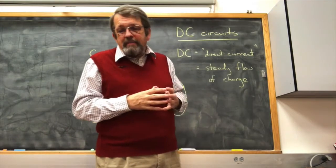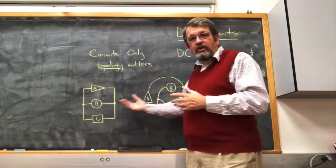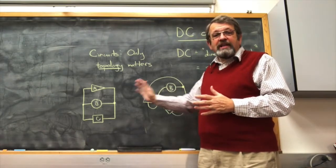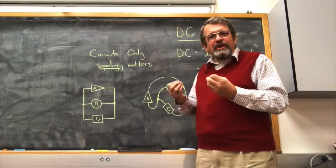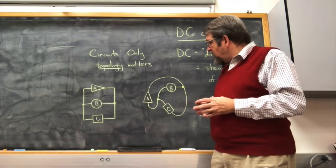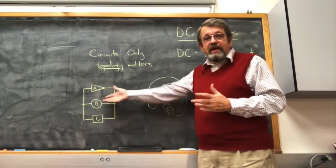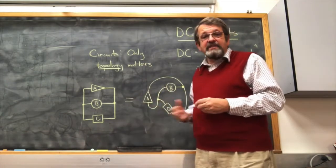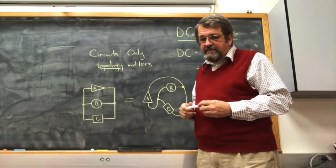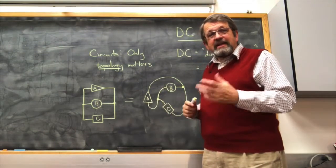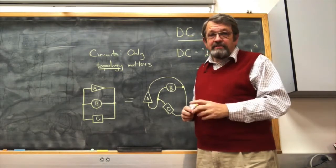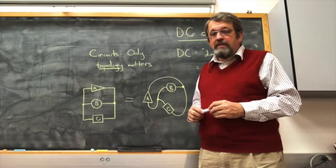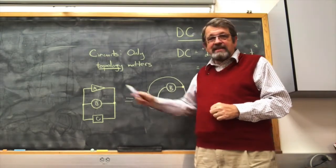The key point about a circuit is that the exact spatial arrangement of the parts doesn't matter — only how things are connected to other things matters. Only the topology of the circuit. So these two arrangements of three devices connected by wires are in fact exactly the same circuit and will behave the same. When we make diagrams, we choose a schematic way that really shows that topology.